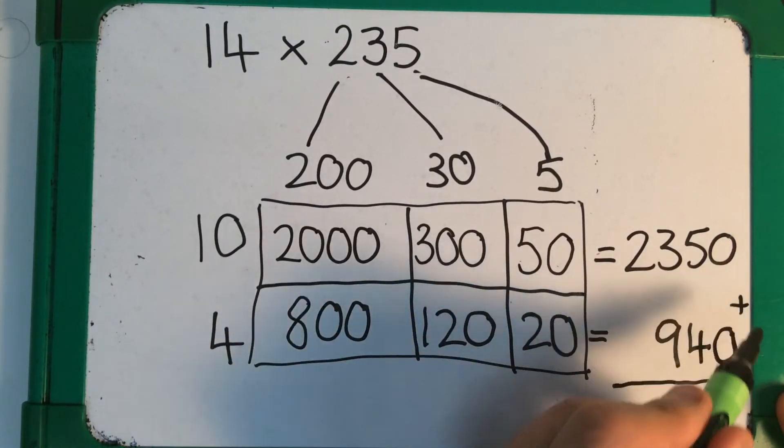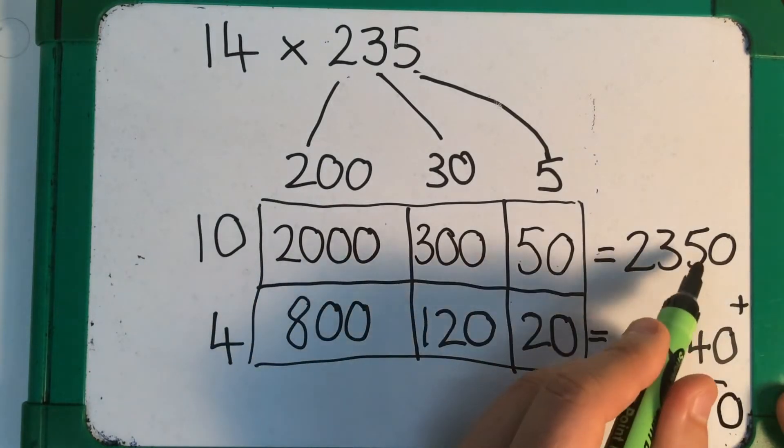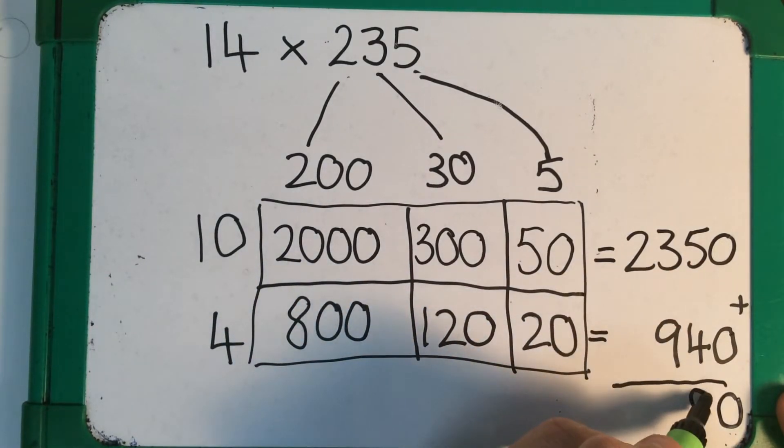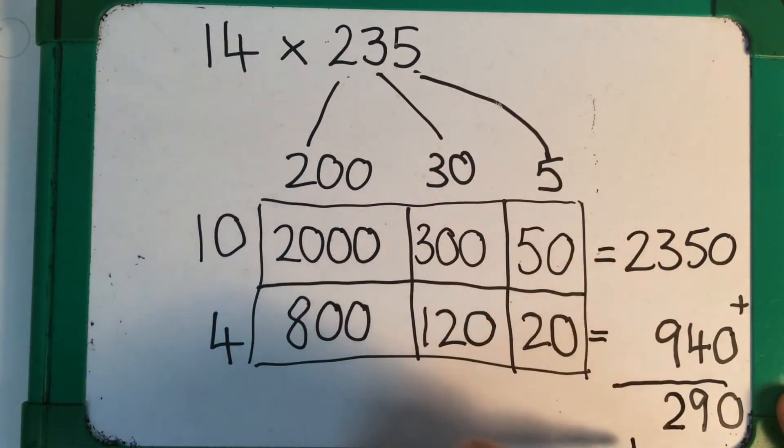And I'm going to add up those two parts, giving me 0. 5 plus 4 is 9. 3 plus 9 is 12. 2 plus 1 is 3.